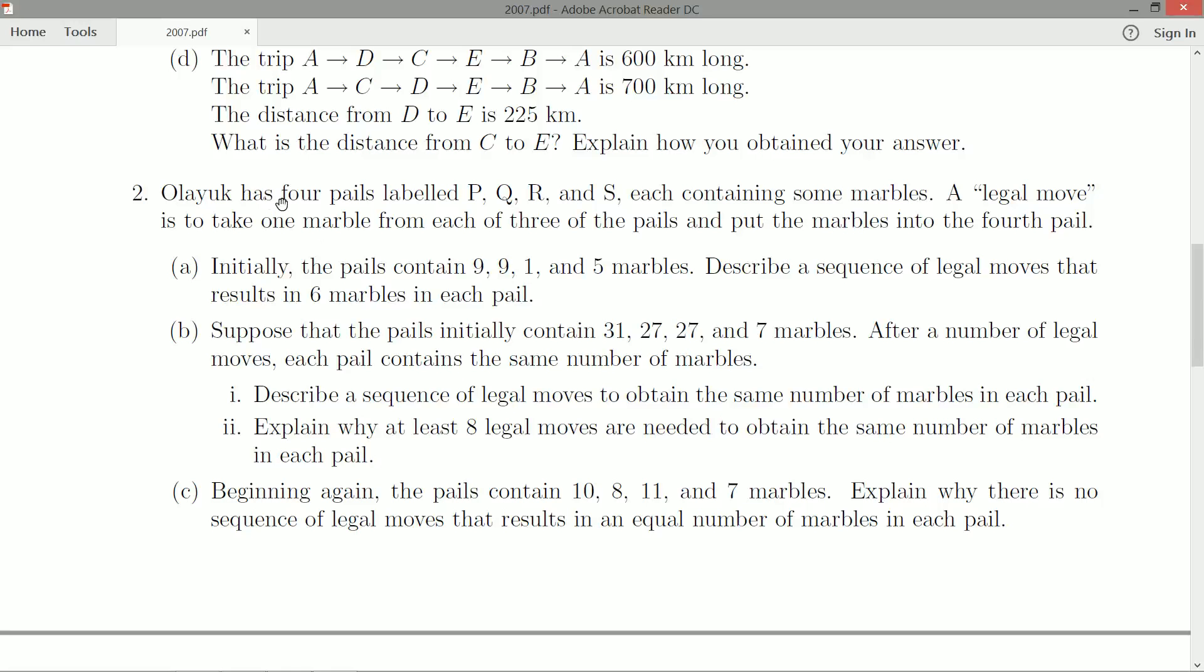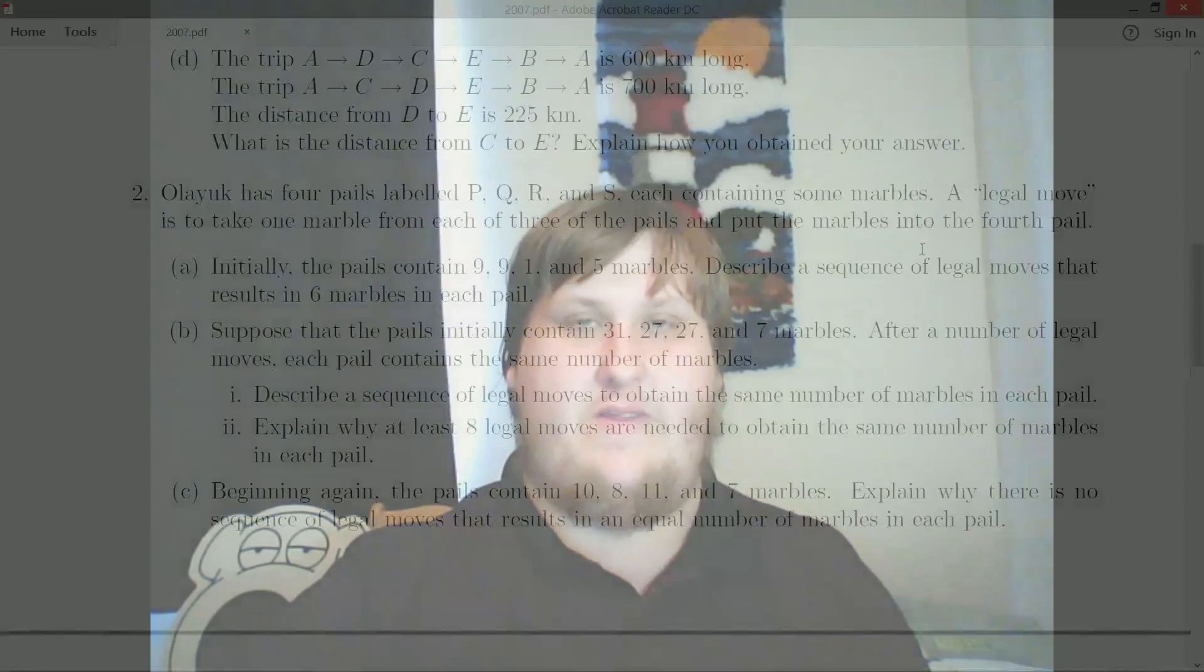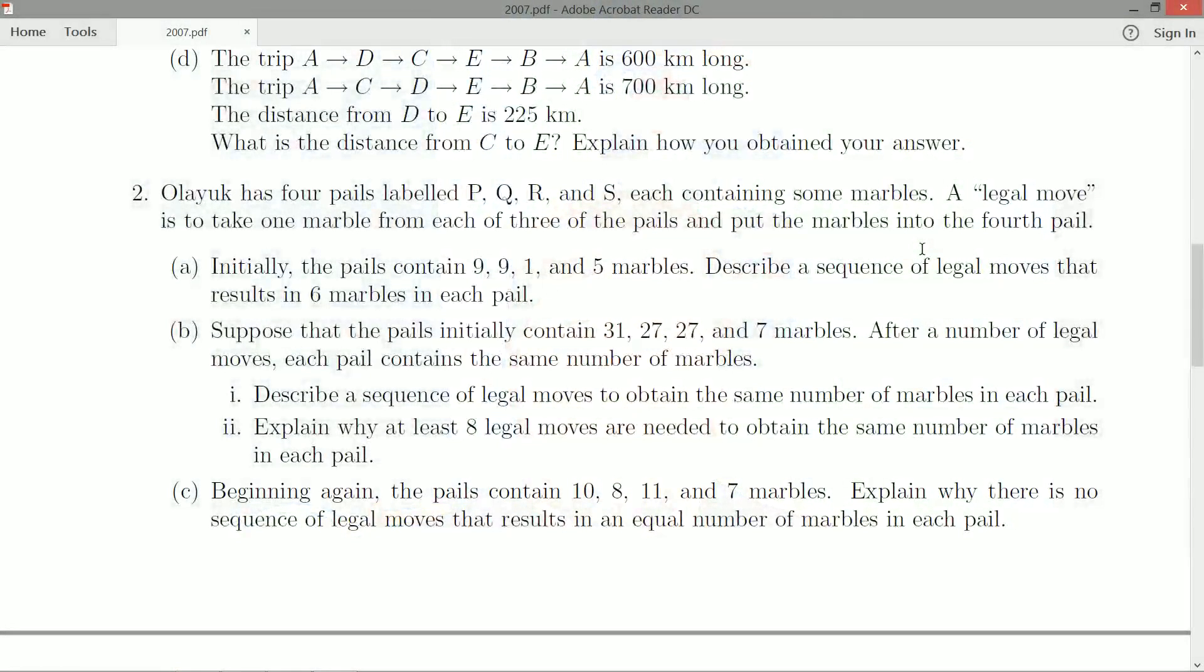So Oleak has four pails labeled P, Q, R, and S, each containing some marbles. A legal move is to take one marble from each of three of the pails and put the marbles into the fourth pail. This is a parity problem. I have seen this quite recently presented, not this exact question, but this concept here presented at a math camp.